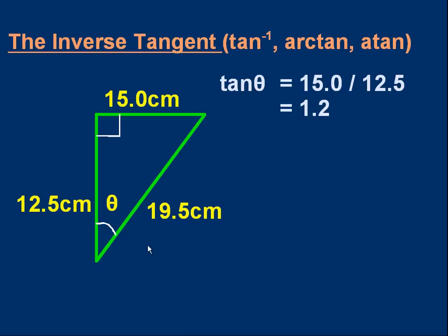Okay, let's go through this. I've put the hypotenuse in. It's actually unnecessary. It was to just make you think which values you're going to use. The tangent of theta is the opposite over the adjacent. It's 15 over 12.5. That's 1.2.